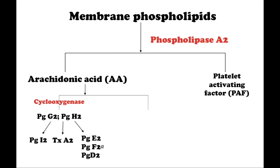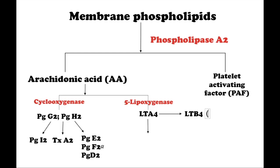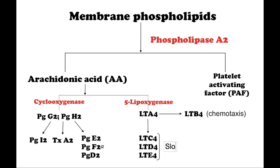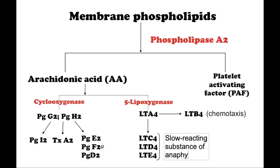Now let's talk about the leukotriene pathway. With the help of lipoxygenase, from arachidonic acid forms leukotriene A4, which converts to leukotriene B4 — which does chemotaxis — and leukotriene C4, D4, and E4. These three are the slow reacting substance of anaphylaxis.